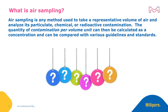Just what is air sampling? Air sampling is any method used to take a representative volume of air and analyze its particulate, chemical, or radioactive contamination. That representative volume of air can then be used to calculate a contamination per volume unit concentration and can be compared to various guidelines and standards. Air sampling and monitoring is how we quantify air contamination.